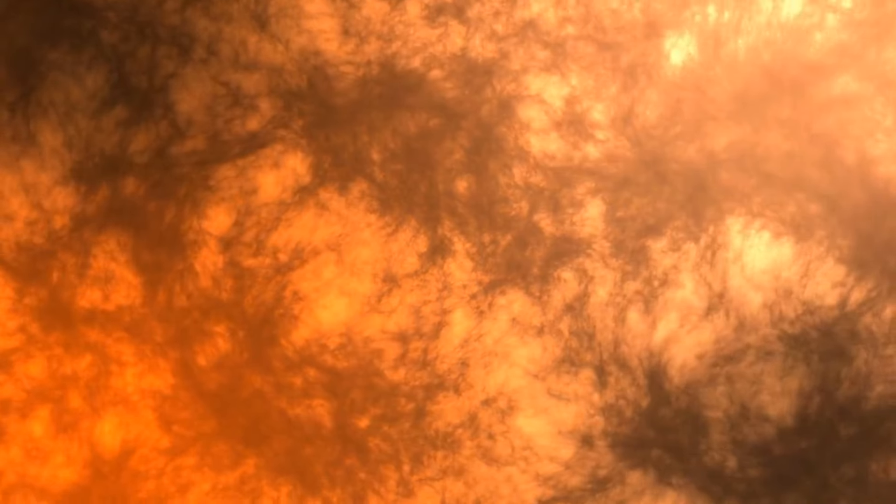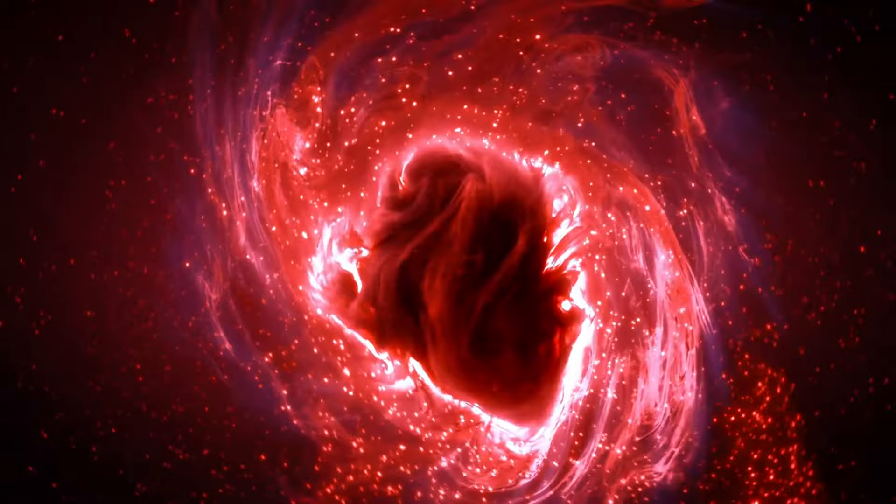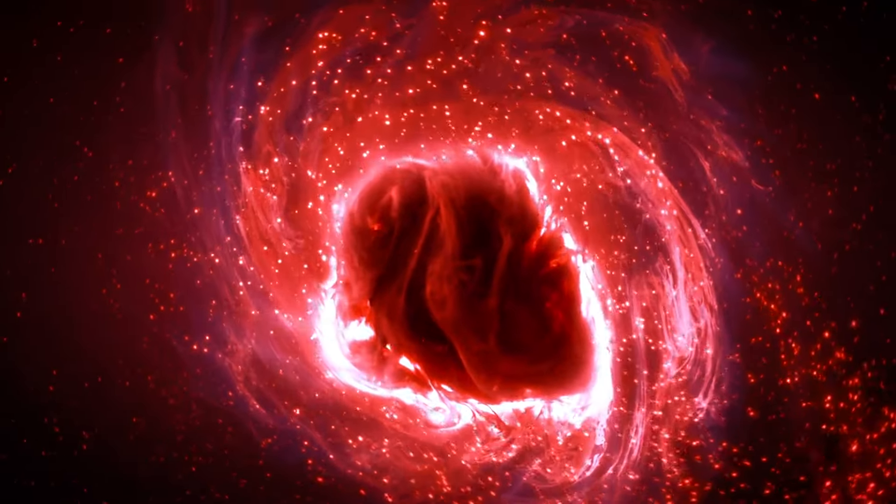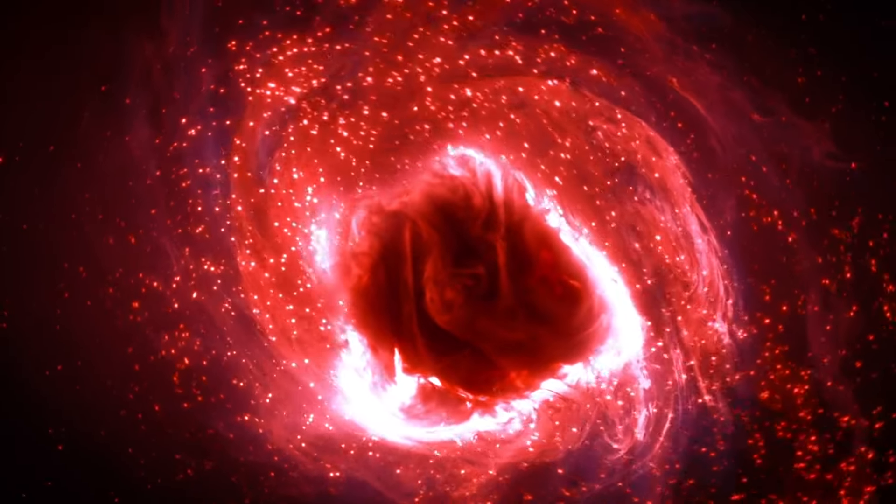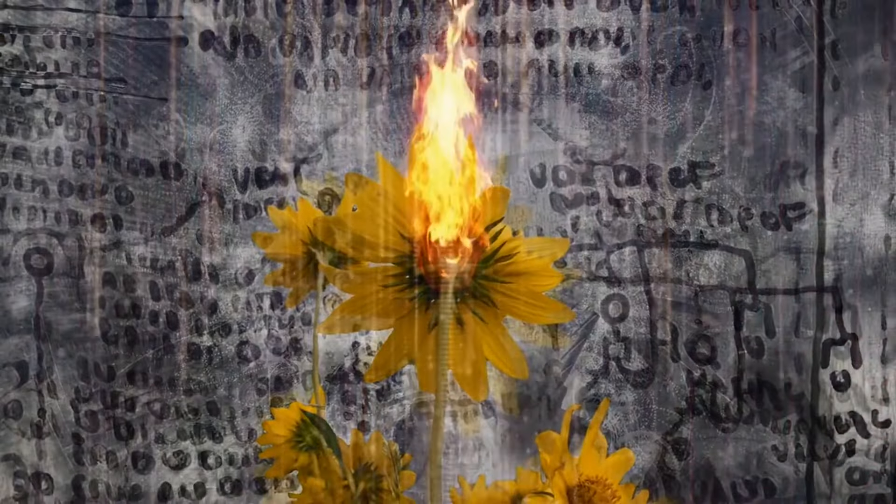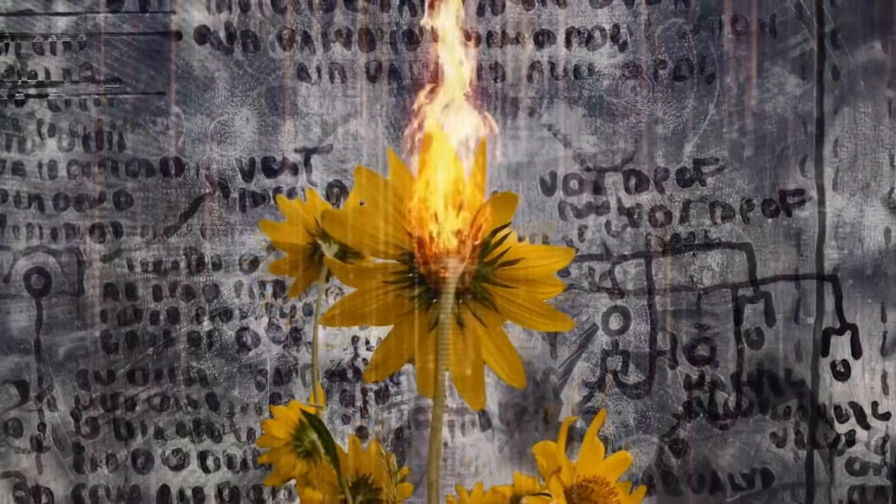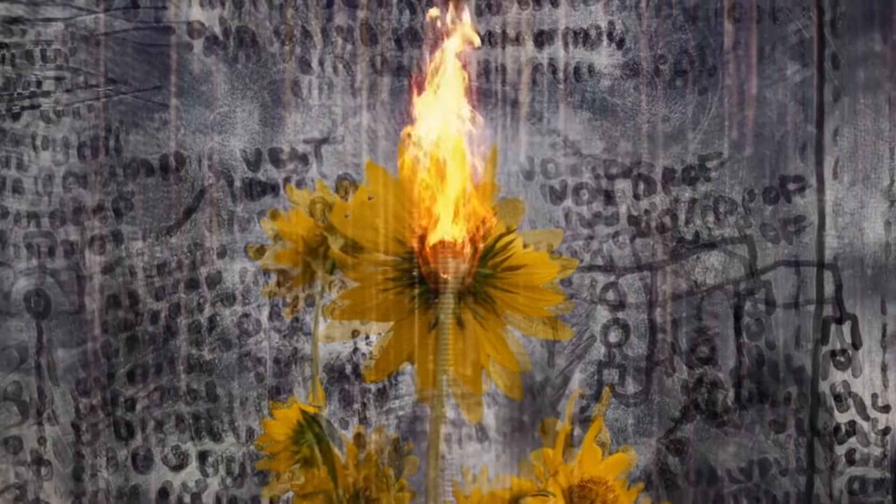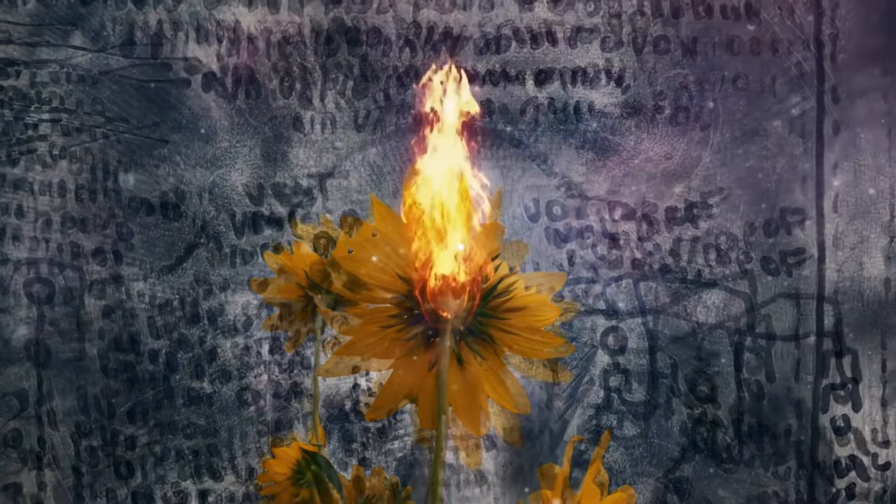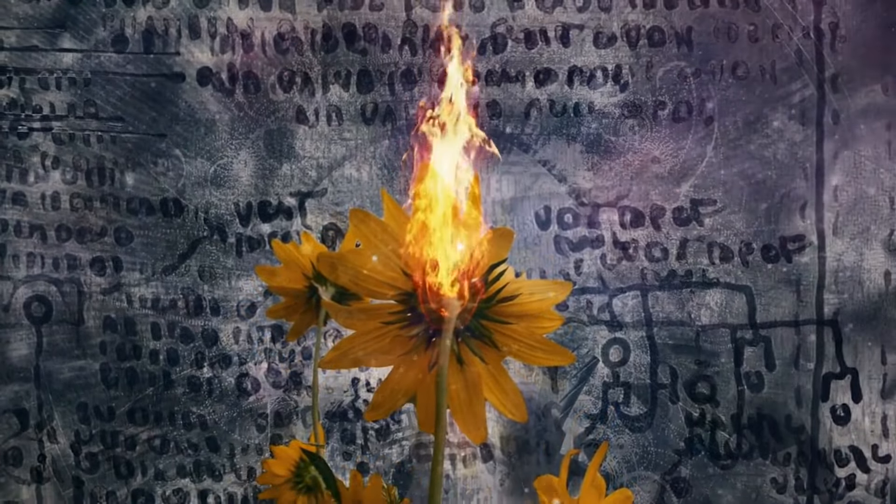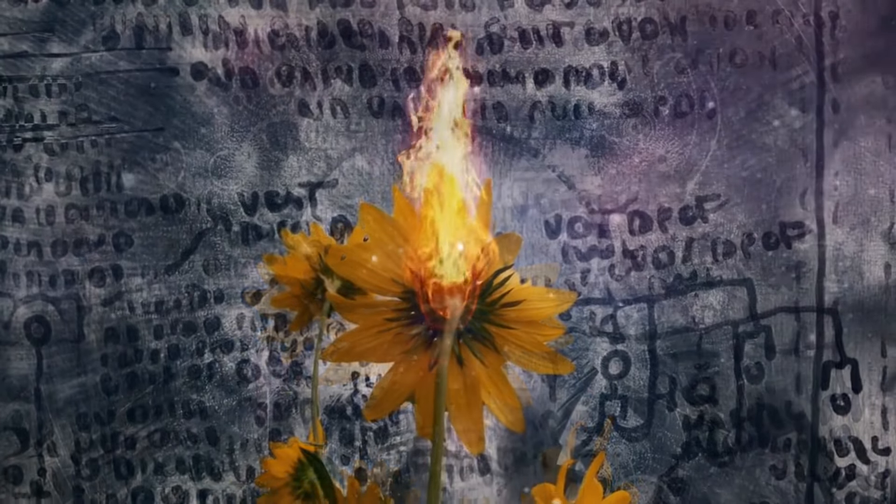This nuclear fusion process causes layers to form within the star, leading to its massive expansion and cooler surface temperature, which gives it its reddish hue. Historical records suggest Betelgeuse appeared yellow around 2,000 years ago and transitioned to red by the 9th century, providing crucial insights into its evolutionary journey.